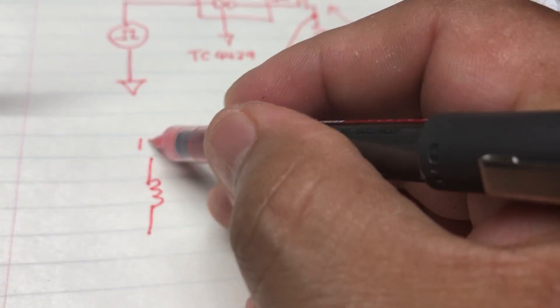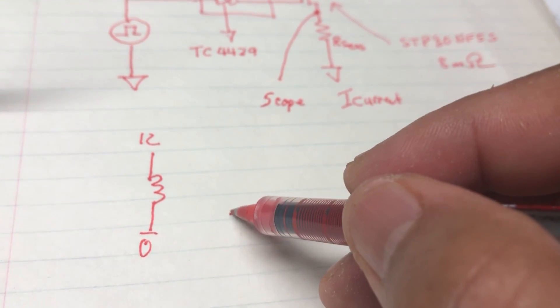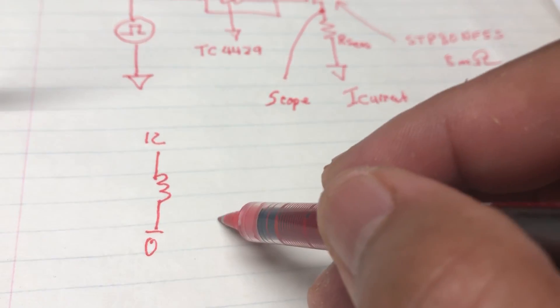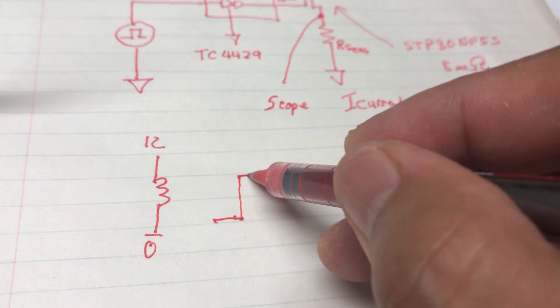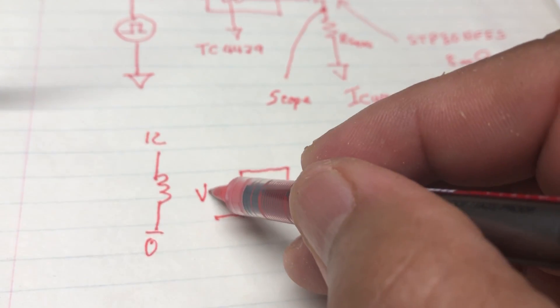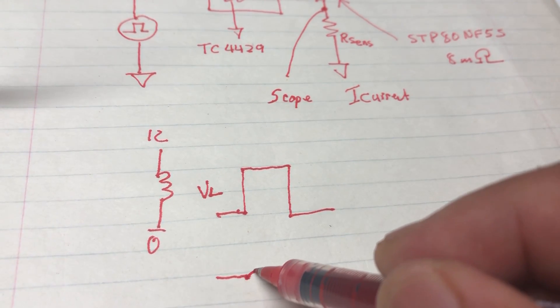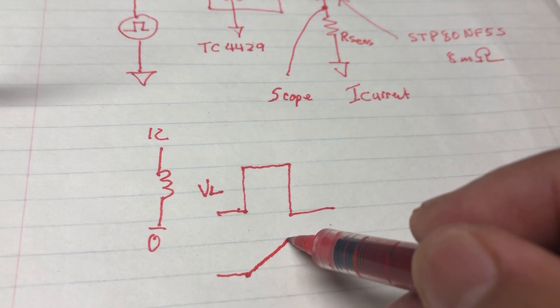So basically if you have the inductor and you put 12 volts - let's say this would be the voltage across VL - then the current should start ramping up like this.